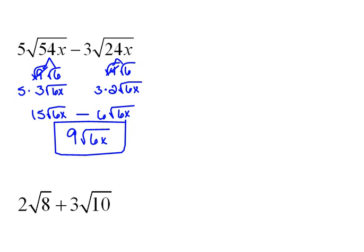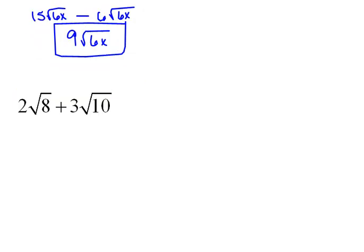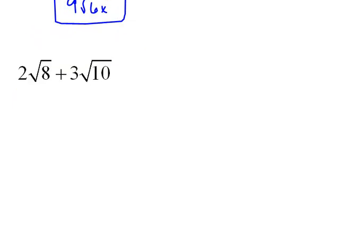Now there are other times that you may or may not be able to do anything, and that's okay. Here in this example, we have 2 square roots of 8 plus 3 square roots of 10. Now, we look at this square root of 8 and we say this is not simplified. So we do need to simplify as much first as possible.